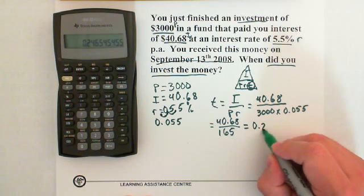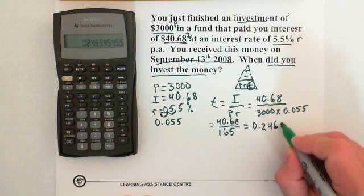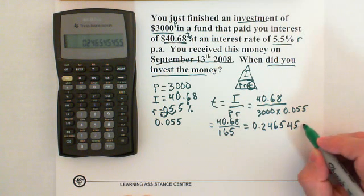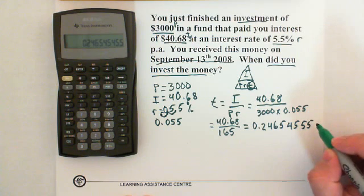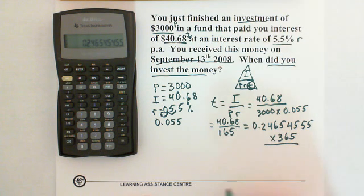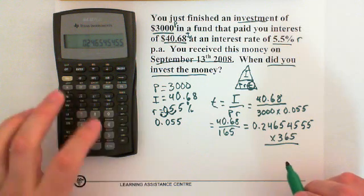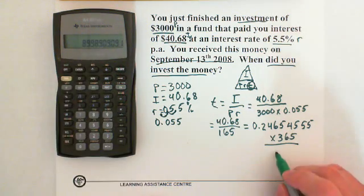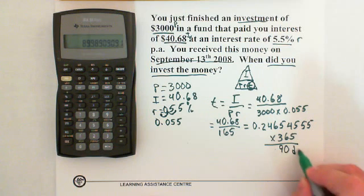So now this is time, but we have to convert it to days. So then we want to multiply this by 365. And the reason we're changing it to days is because the question wants to know when did you invest the money. And so then we're going to use the date function, so we just convert it to days. So just times 365, and we get 89.9, so we're going to round this to 90 and make it 90 days.